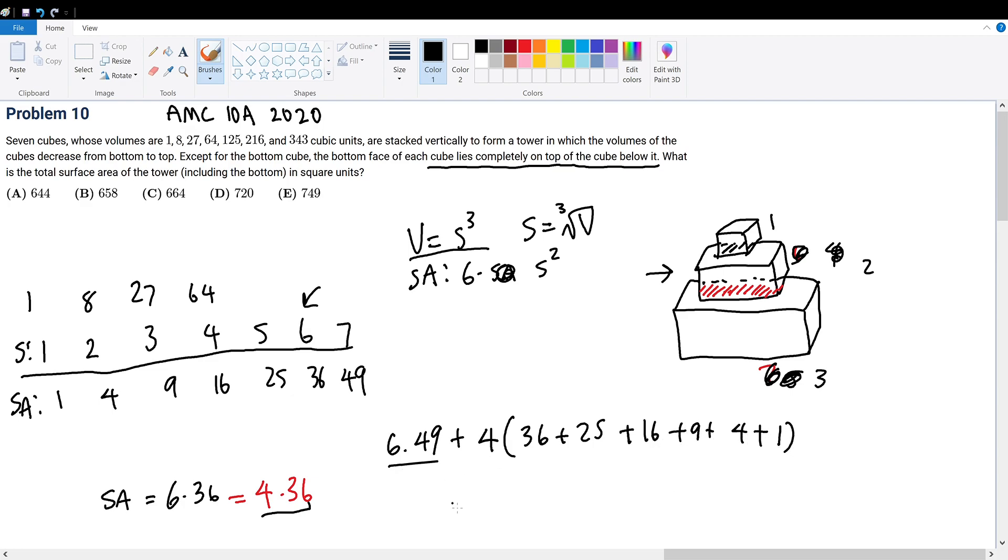Six times 49, what is this? This will be 294 plus four times this quantity. 36 plus 25 is 61, this is 25 and this is 5. This becomes 30 plus 61 gives us 91. So four times 91 plus 294 will be our solution, which is 294 plus 364, which is 658. So our solution to this question will be answer choice B.